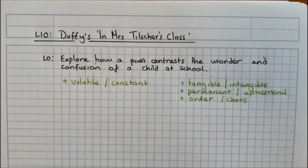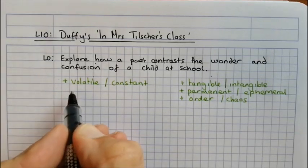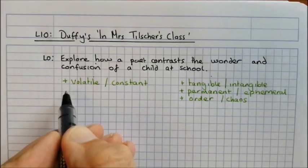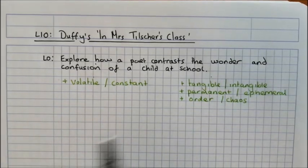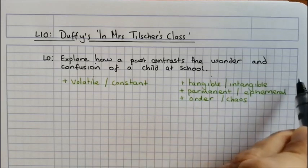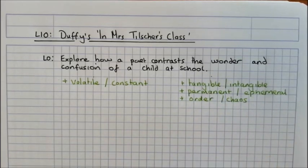Thinking about how we can use our versatile vocabulary, we have volatile and constant which we've learned about today, and then also we've got these bank of other brilliant words: tangible, intangible, permanent, ephemeral, order and chaos that we're going to bring into this. As you go through these poems you can start applying them in lots of different ways and you're going to sound really smart as you do it.